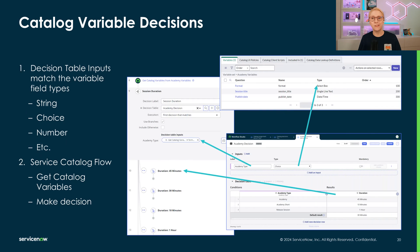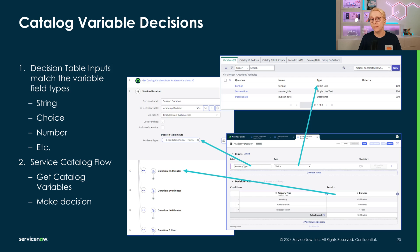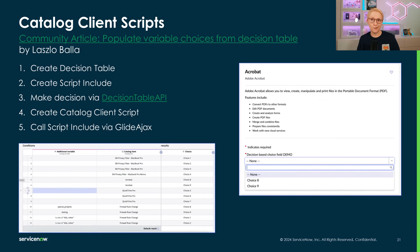Beyond this, we can also make decisions based on catalog variables. Note that we're not yet able to natively use catalog variables as inputs for a decision table. The current recommendation is to create simple non-reference inputs that match the catalog variables field types. When building the service catalog flow, we can first use get catalog variables for the current requested item, and then map those variables to the make a decision inputs.